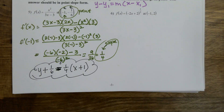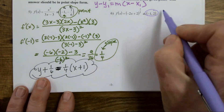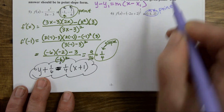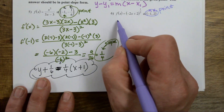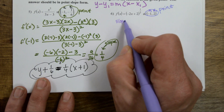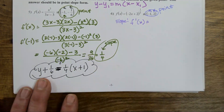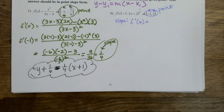All right, let's do our next one. Got my point — that's my x1, y1. I need my slope, so I find the derivative. I have to figure out which rule to use: product, quotient, power, or chain rule?